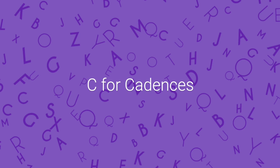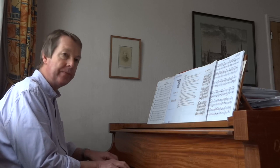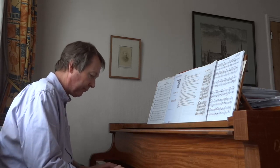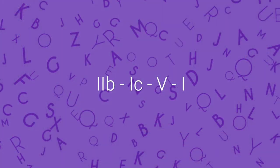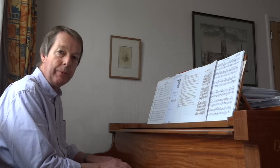So practice C also for cadences — not just 2 7b, and you'll need a preparatory chord there for the dissonance: chord 6 in that case or 1b. But also practice the formula 2b 1c 5 1, which we find a lot in 19th century and 20th century hymn harmonisations.